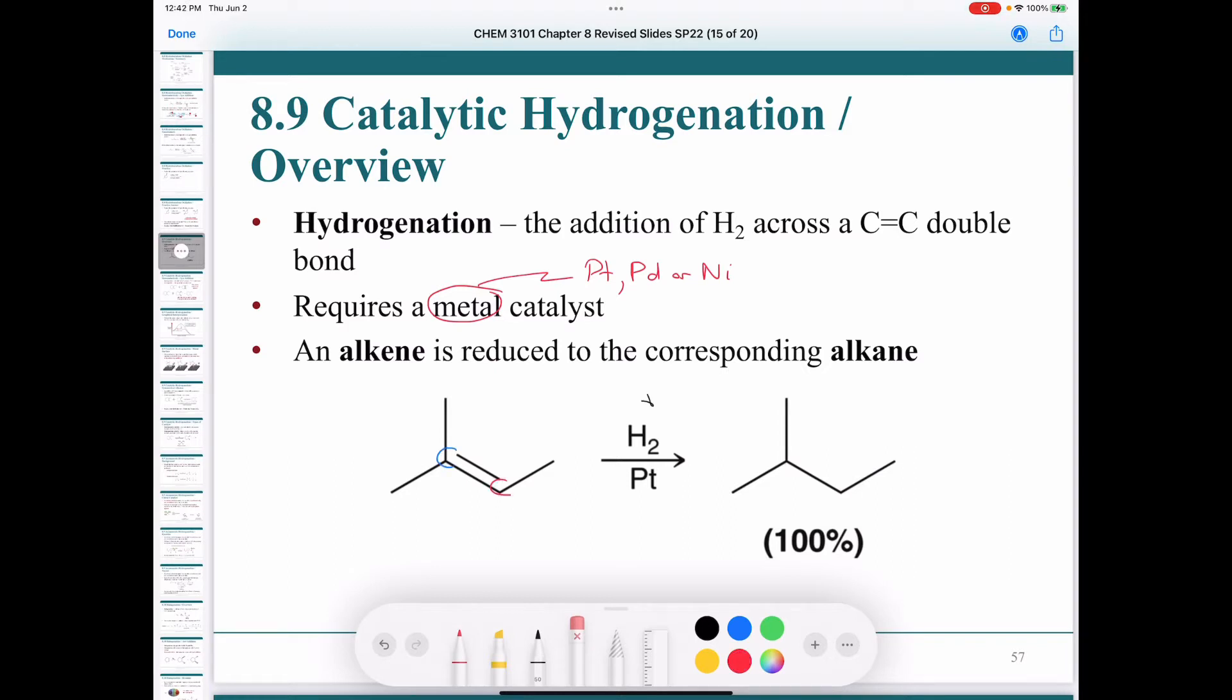Upon hydrogenation, an alkene is reduced to the corresponding alkane. And what you see is that we've added a hydrogen to each of the carbons of the double bond.